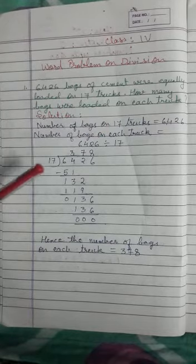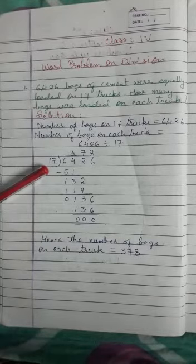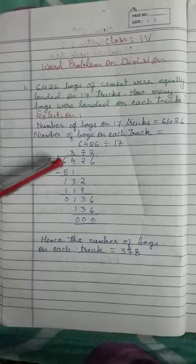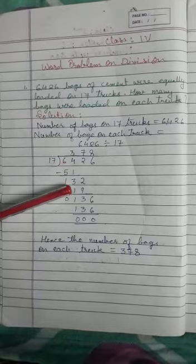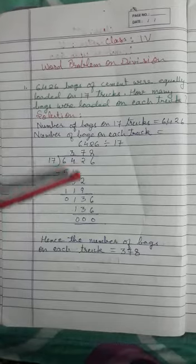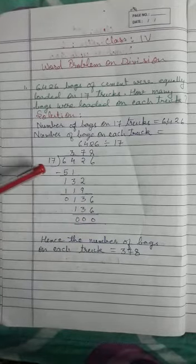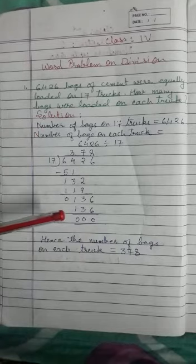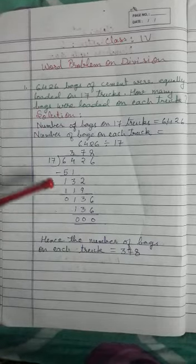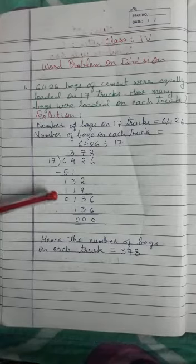We will divide it. 17 into 64, 17 times 3 is 51. Now subtract: 64 minus 51 is 13. Bring down 2 to get 132. 17 times 7 is 119.